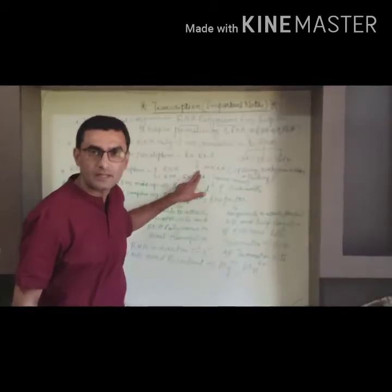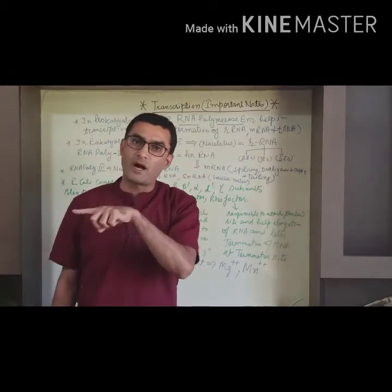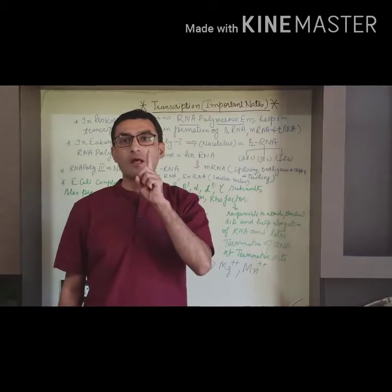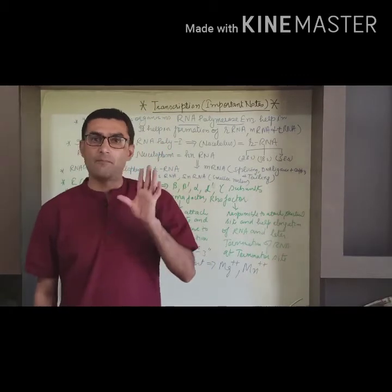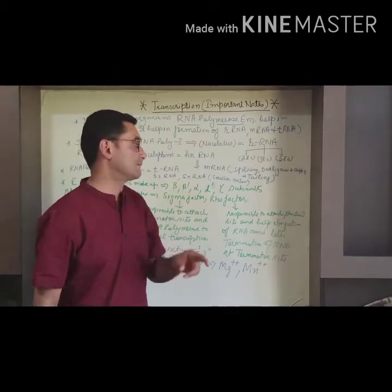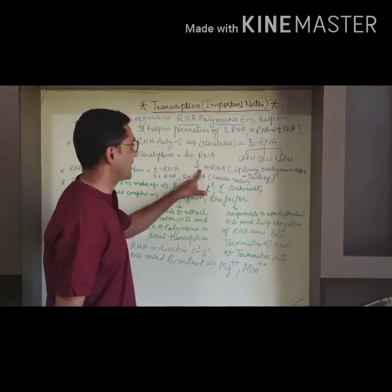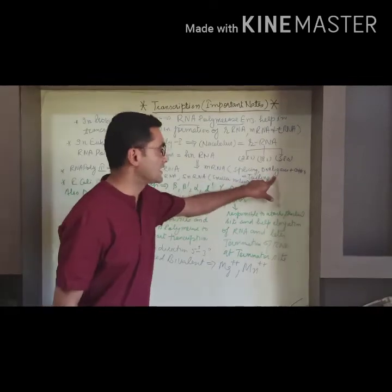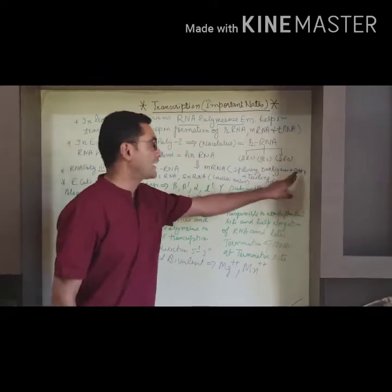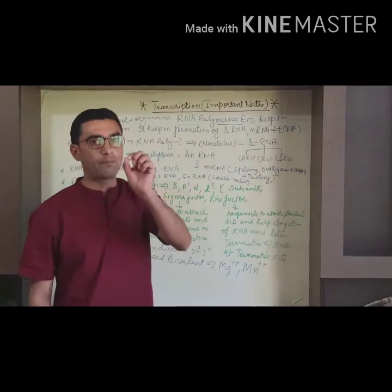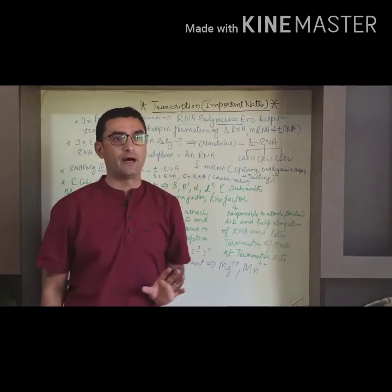mRNA is modified and formed. What processes occur? We will study in mRNA chapter. In previous lecture, one lecture we gave on mRNA. What happens before mRNA formation? HnRNA converts to mRNA. First splicing occurs, then DNA ligase enzyme helps, then capping, then tailing, then mRNA is formed.